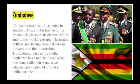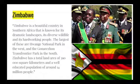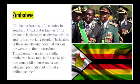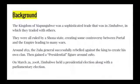On the picture, I have a flag of Zimbabwe and the government there. The kingdom of — I can't really pronounce this very well — Mapugumbi, was a sophisticated trade kingdom in Zimbabwe, in which they started trading with others.